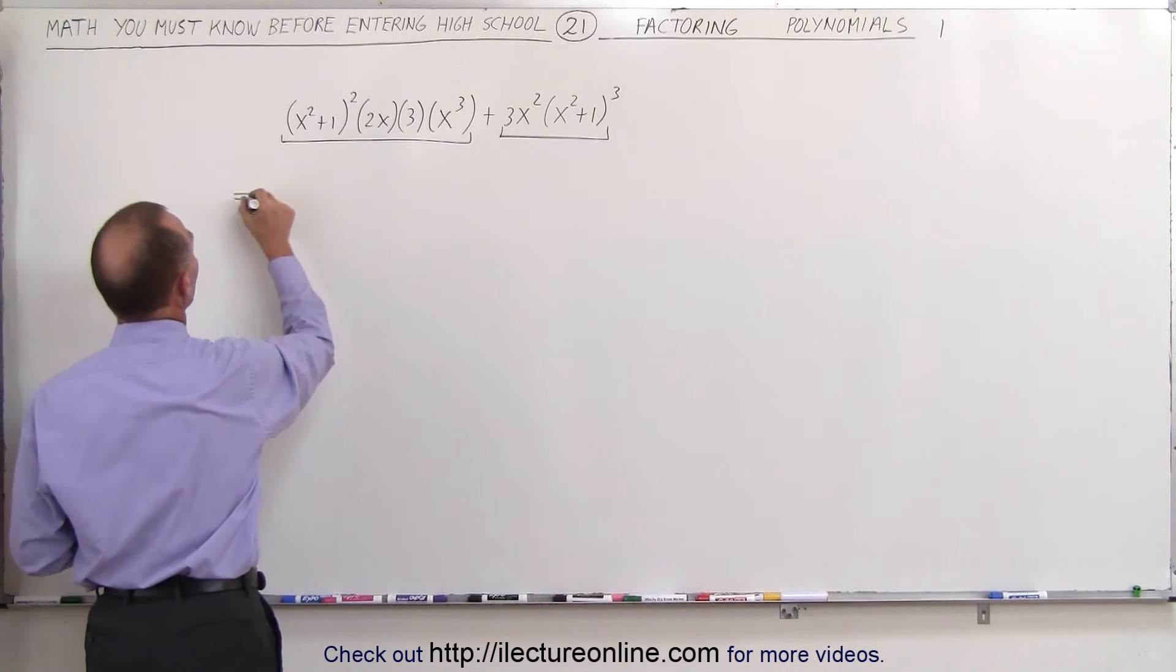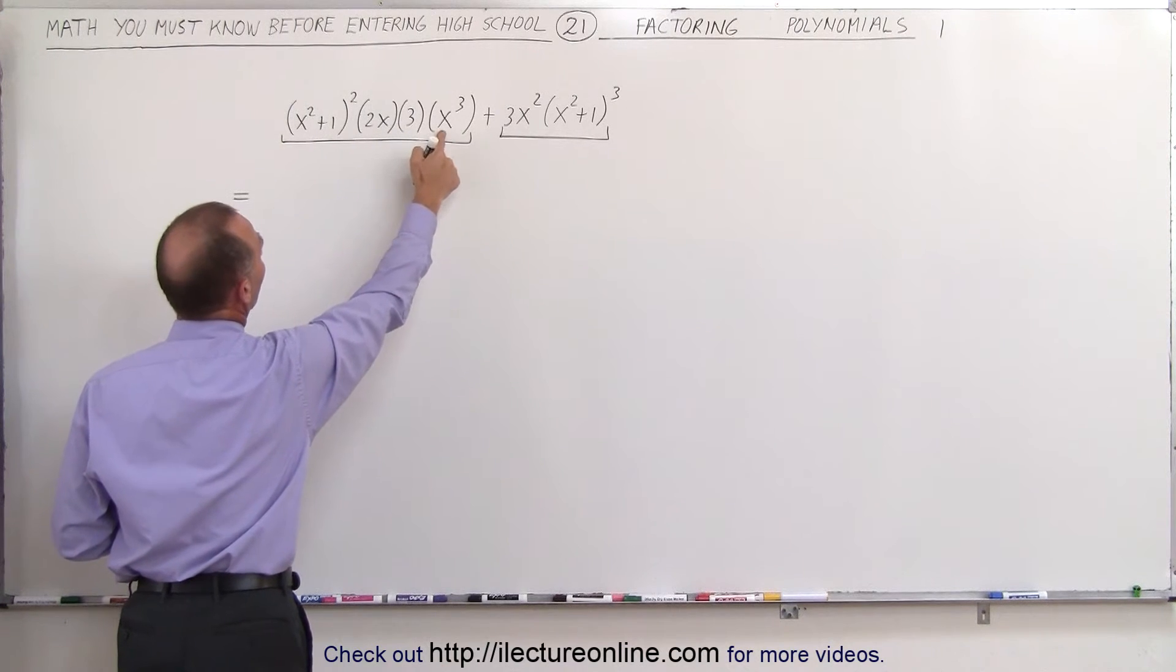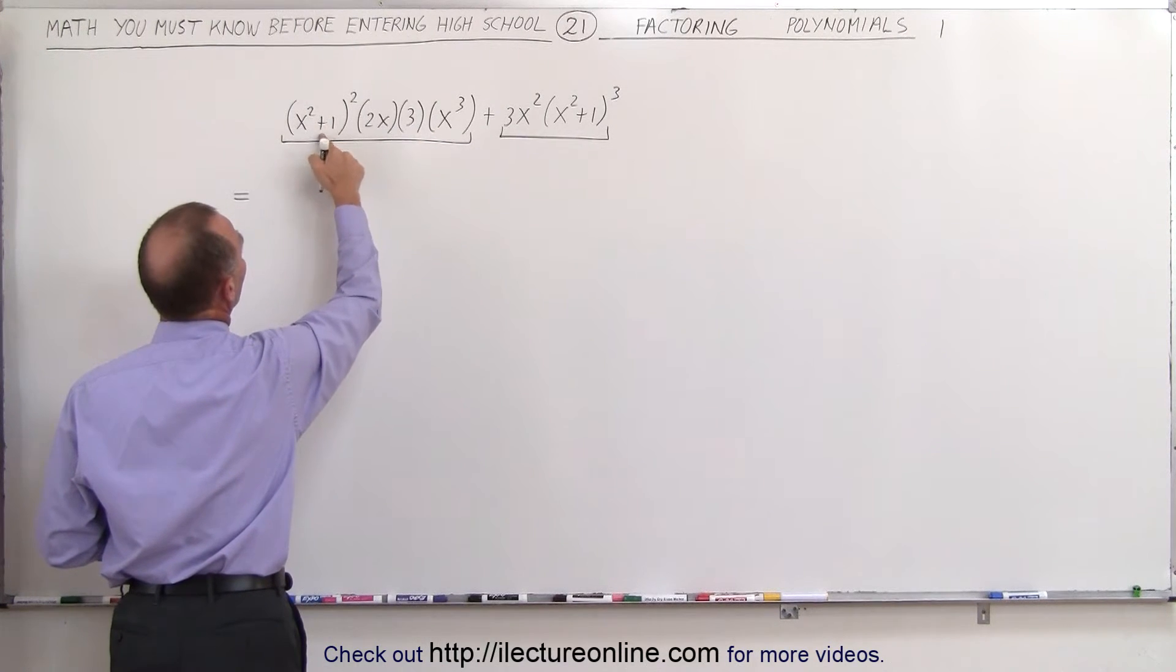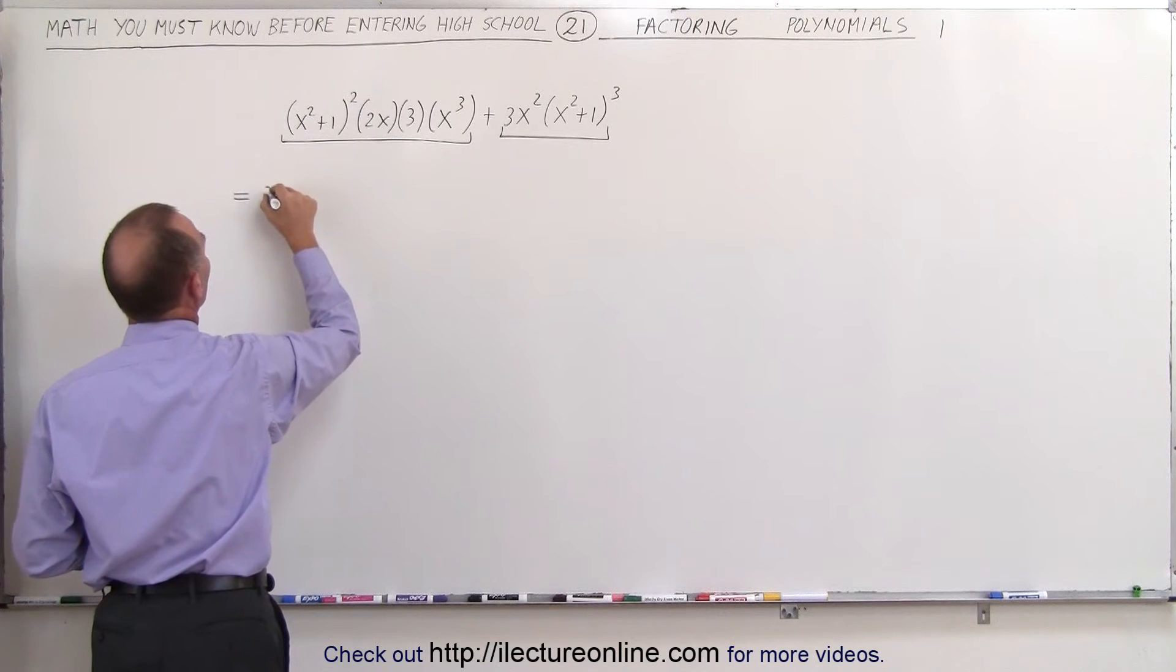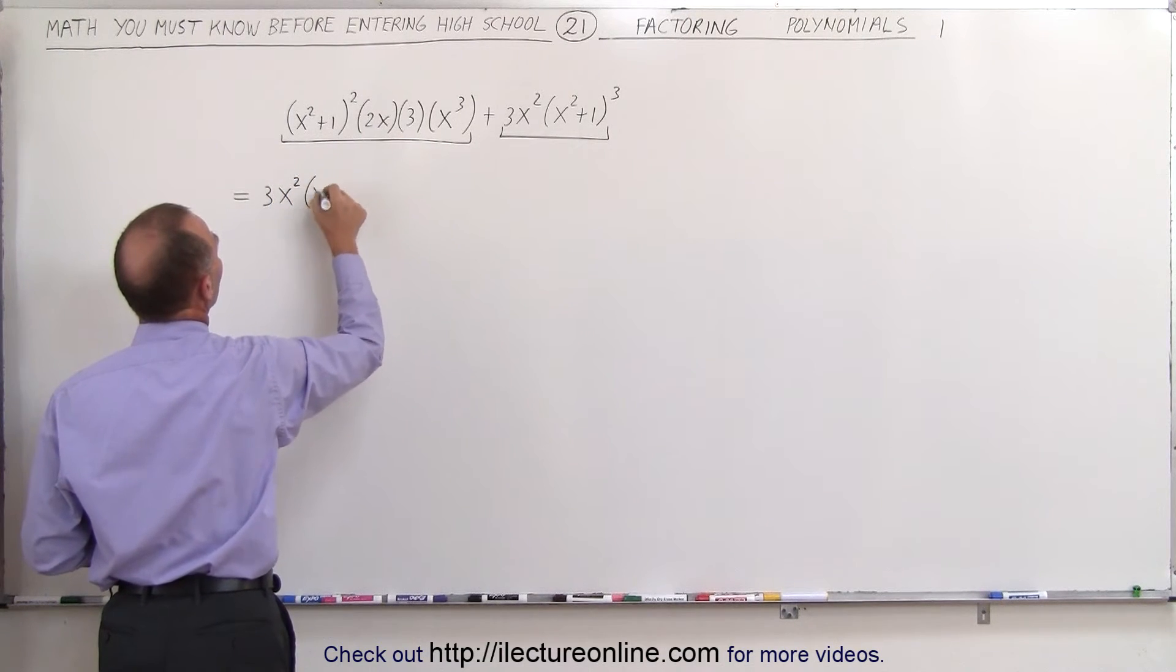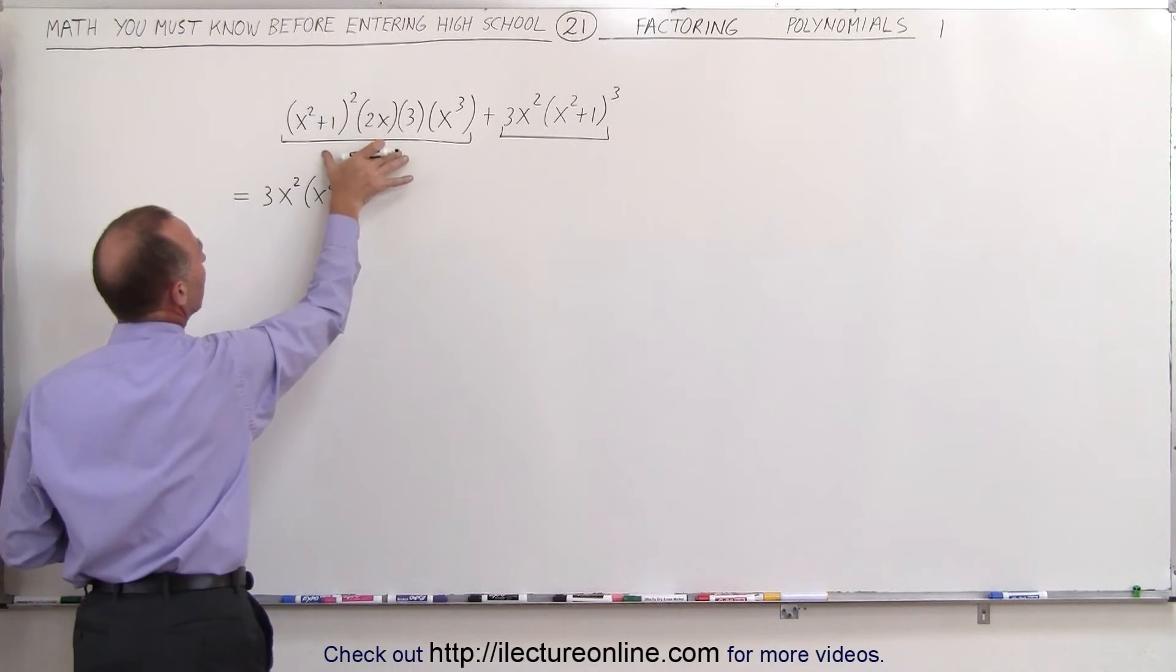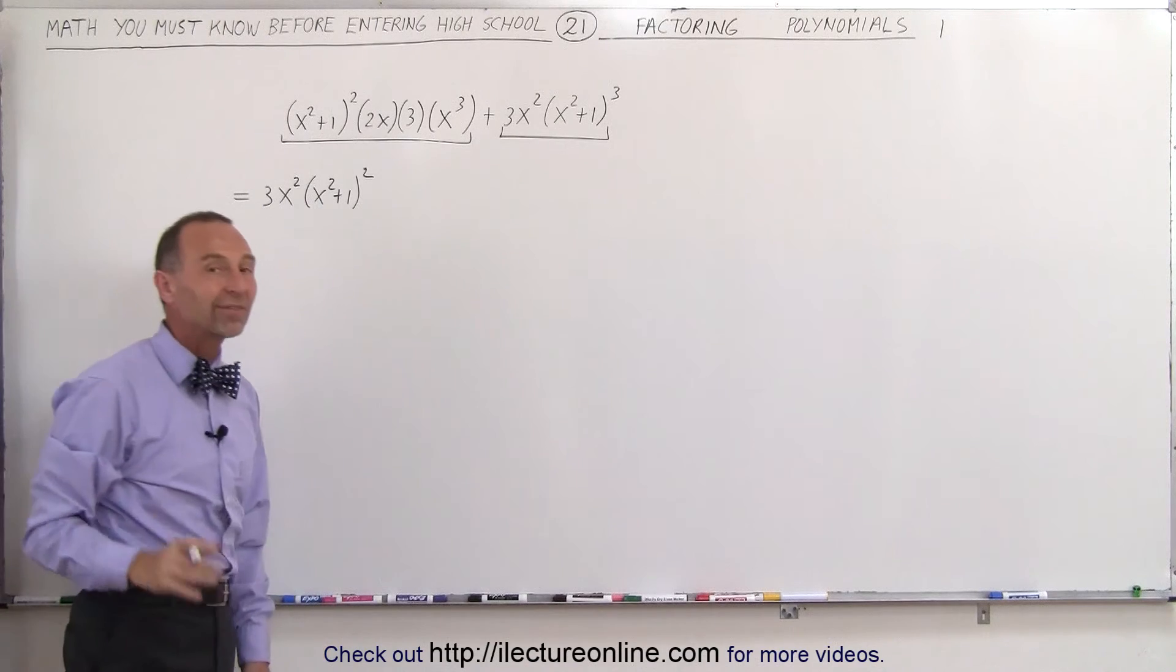Which means that this becomes—remember we're going to factor out a 3 and an x squared and x squared plus 1 quantity squared. So this becomes 3 times x squared times x squared plus 1 quantity squared. That's going to be factored out from here and here. Now what's left?